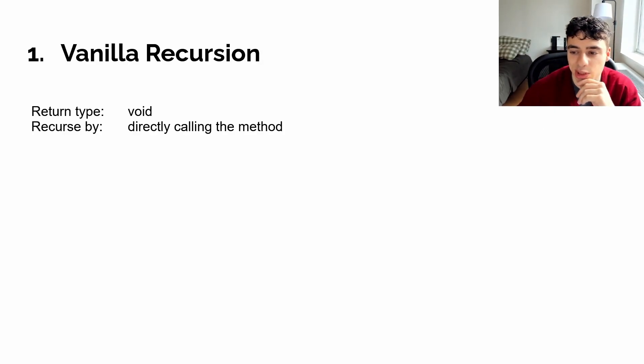So the first type of recursion that I want to start with is vanilla recursion. With a recursive function, you are continuously putting calls to the same method on the call stack. This is why when you infinitely recurse, like with some sort of infinite loop, your program will typically fail with a stack overflow exception.